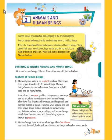Only human beings walk erect, while most animals move on all four limbs. We can move with our legs only, but most animals walk with their four limbs. There are many differences between human beings and animals.